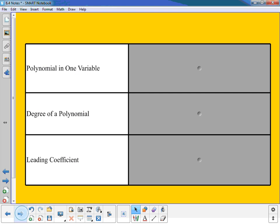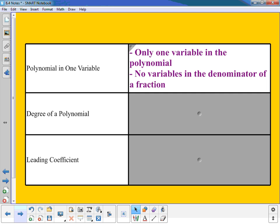Now let's take a look at our terms for today. The first one is a polynomial in one variable. A couple things that we want to keep in mind when we have this is that there's only one variable in the polynomial, which is why it's called a polynomial in one variable. And we also are not supposed to have any variables in the denominator of a fraction.